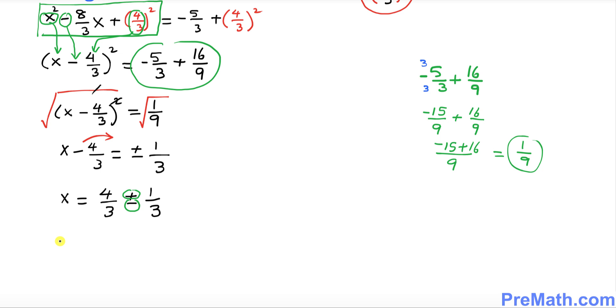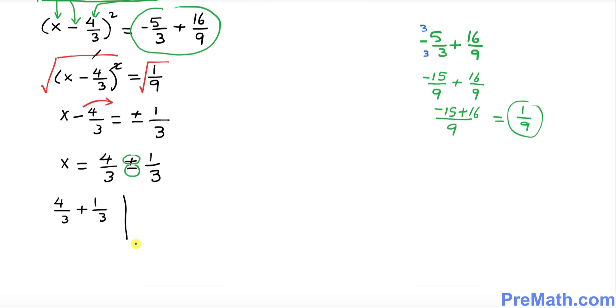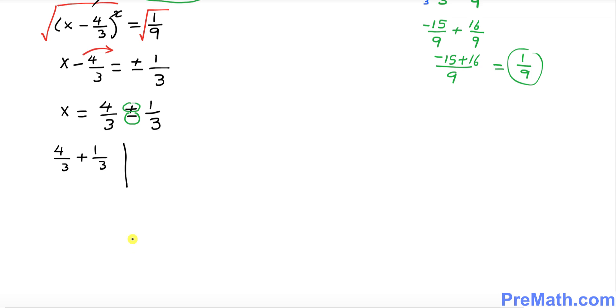One of them is going to become 4 over 3 plus 1 over 3. The other one is going to be 4 over 3 minus 1 over 3. So that is going to give us, 3 is our common denominator, 4 plus 1 that makes x equal to 5 over 3 as one of our solution.